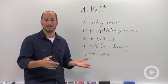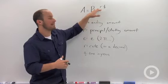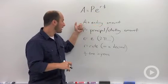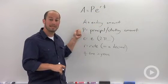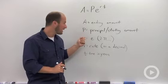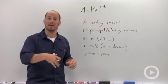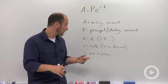It's what I call the PERT formula. A equals PE to the RT. A is your ending amount, P is your principal or the amount you started with. E is the same E as natural log, so 2.7, so on and so forth.